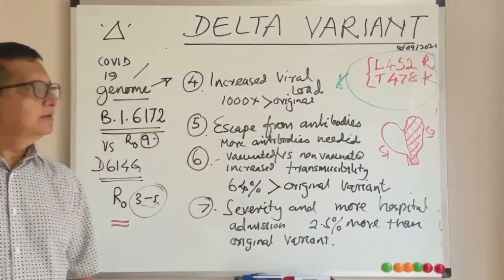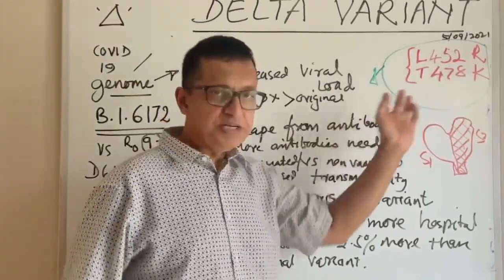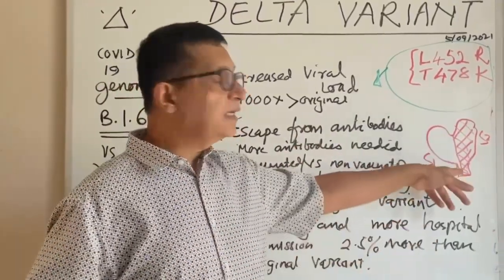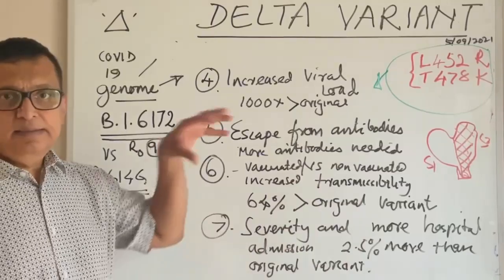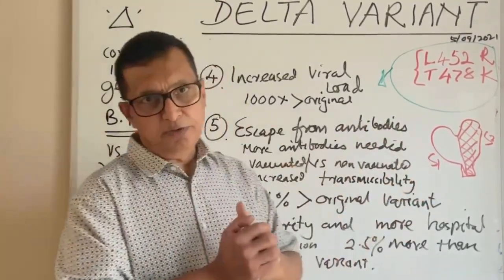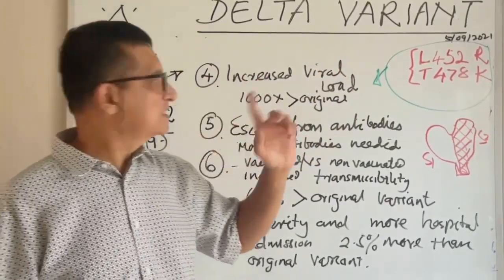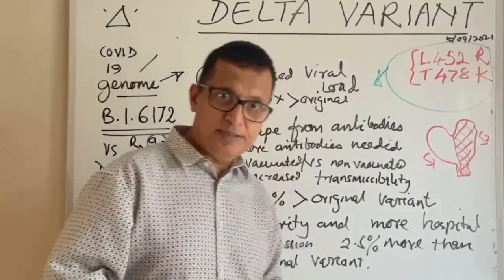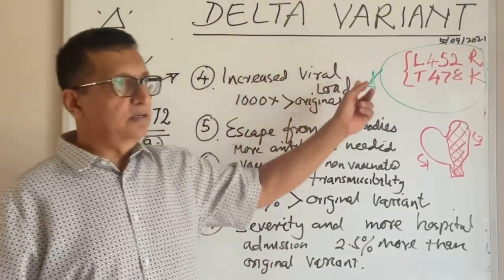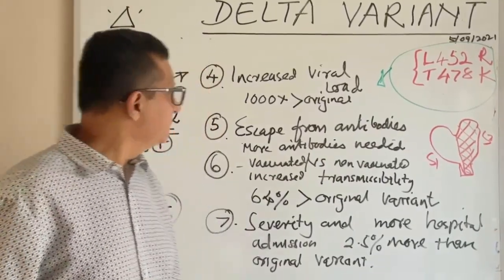The fourth factor is increased viral load. Because of this mutation, more viruses enter the alveolar cells very quickly due to the rapid cleavage process, and more viruses are produced. The viral load becomes much higher — usually said to be 1,000 times more than the original Wuhan variant's viral load. Obviously, when the viral load is 1,000 times higher, transmissibility increases dramatically.